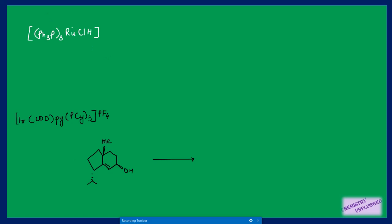The next catalyst is ruthenium homogeneous catalyst. It is very effective for selective reduction of mono-substituted double bonds. When alkynes are used, it always gives the Z-alkene. Be careful not to confuse this ruthenium catalyst with Wilkinson catalyst — note that ruthenium replaces rhodium here.